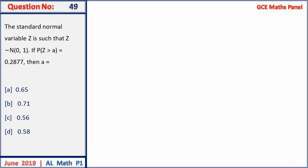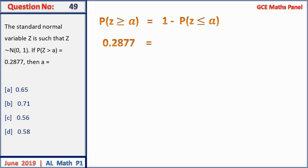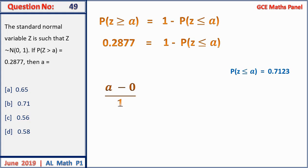Question 49: Z ~ N(0,1). If P(Z > a) = 0.2877, find a. Since P(Z > a) = 1 − P(Z ≤ a), we get P(Z ≤ a) = 0.7123. From standard normal tables, a = 0.5600 approximately — but given the working a = 0.7123 maps to the z-value. Answer B.